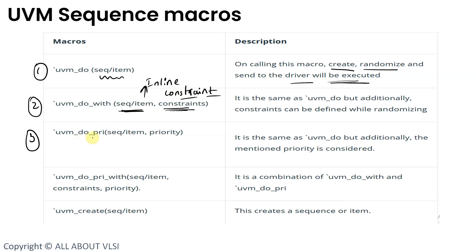The third macro is `uvm_do_pri with sequence item and priority. It is the same as `uvm_do but additionally the mentioned priority is considered. The fourth one is `uvm_do_priority_with, taking sequence item, constraints, and priority — the same as the previous one but specifying both priority and constraints.